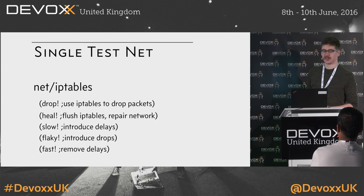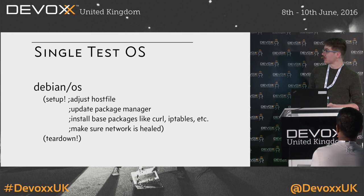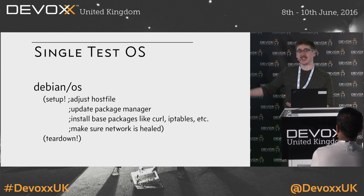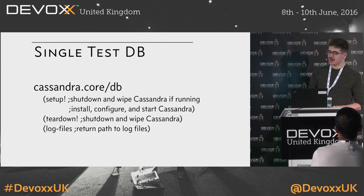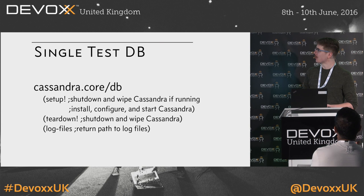We'll have an implementation of an OS protocol — in the main Jepsen repository, the available implementations are Debian and SmartOS. This includes adjusting the host file, updating the package manager, installing base packages, and any OS-level orchestration that sets up a system for test. We'll also have an implementation of a DB protocol — in the case of Cassandra, it will shut down and wipe Cassandra if running, then install, configure, and start Cassandra, and at the end of the test shut down and wipe Cassandra and return the path to log files so they can be archived for further analysis.